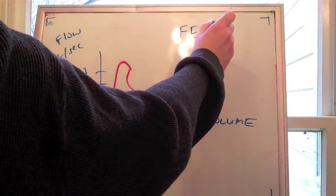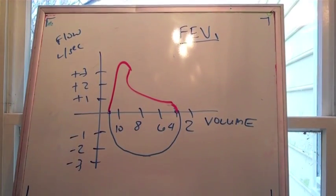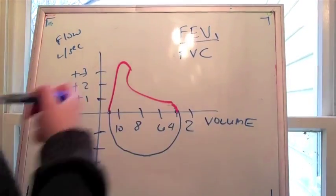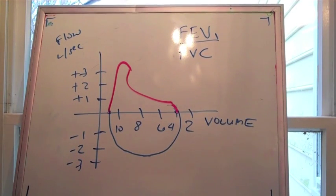So the forced expiratory volume in one second, the rate of air you get out in that first second, is low. And your forced vital capacity, or the total amount of air you blow out, is normal. So your ratio is low.